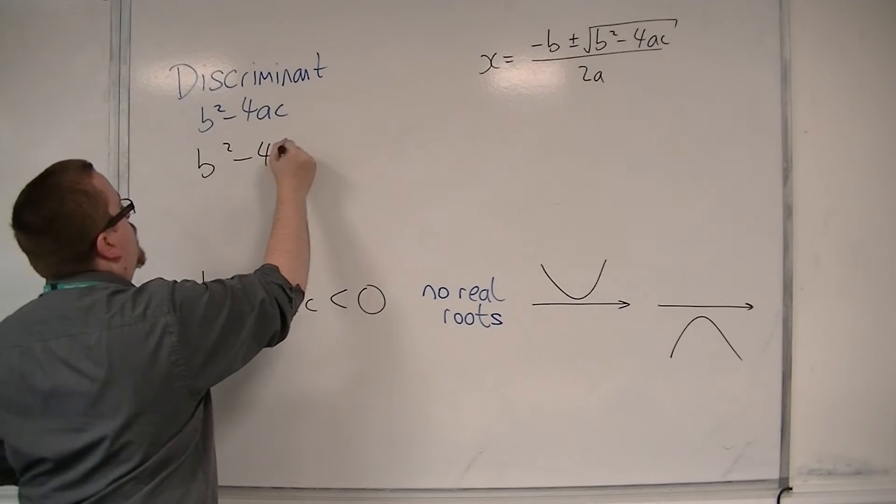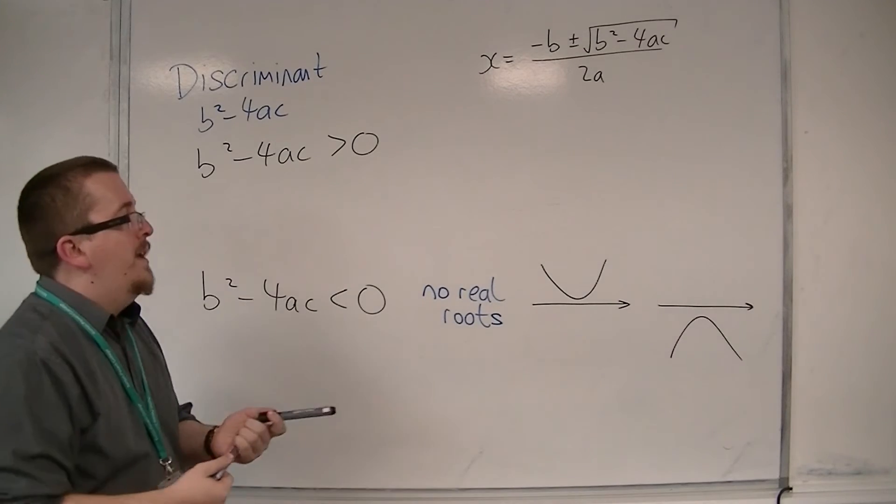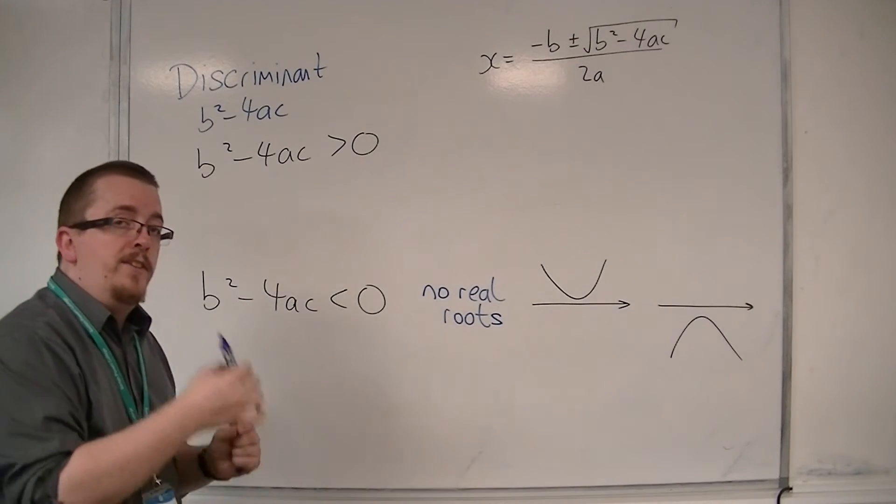If the discriminant is positive, then what we find is that we have two distinct real roots.